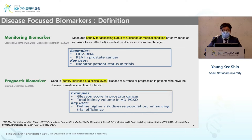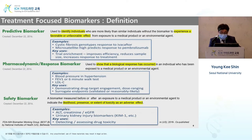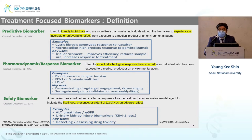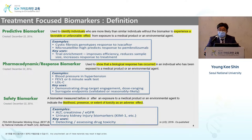For prognostic biomarkers, the likelihood of a clinical event can be identified — Gleason score for prostate cancer is a good example. For predictive biomarkers, the regulatory term is companion diagnostics, which predicts whether there will be a response to a drug. For immuno-oncology drugs, PD-L1 level or microsatellite instability high cancer are examples, and tissue-agnostic pembrolizumab can be used based on these predictive biomarkers.